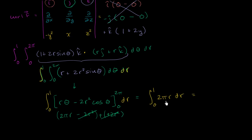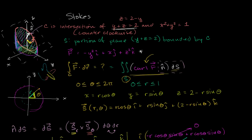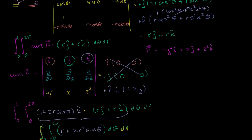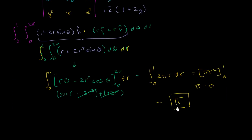The antiderivative of 2πr is just πr squared. Evaluating πr squared from 0 to 1: at 1 you get π, at 0 you get 0. So the result is π minus 0, which equals π. To recap what we've done over the last few videos: we had a line integral to evaluate, and instead of computing it directly, we used Stokes' theorem to convert it to a surface integral over a piecewise smooth surface bounded by that path. After all that calculation, we found the answer to be π.